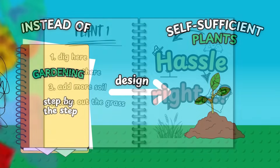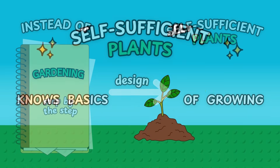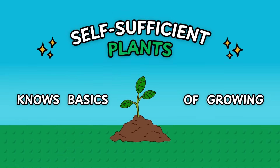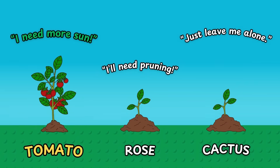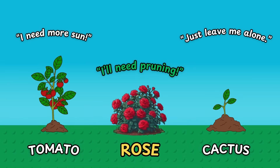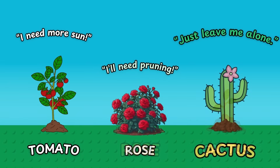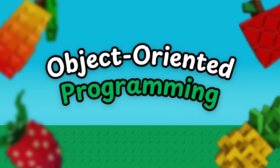Now, picture another approach. Instead of one massive notebook, you design self-sufficient plants. Each one already knows the basics of growing — you just tweak what makes it unique. The tomato says it needs more sun, the rose says it needs pruning, and the cactus says just leave me alone. That, in simple terms, is what object-oriented programming is all about: thinking of things as smart objects that handle themselves.